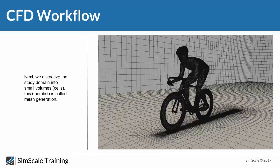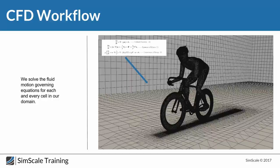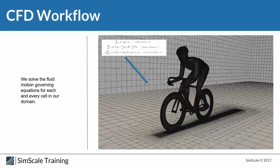The next step is to discretize this domain of study into small volumes called cells — this operation is called meshing. We start with the CAD model, then discretize it into small boxes. These small boxes give us control over our domain to later analyze our governing equations. We then have a set of equations describing flow motion in space and time called the Navier-Stokes equations, which describe the flow behavior over an object. We apply these equations on each cell in the domain to give us a cloud covering our geometry.